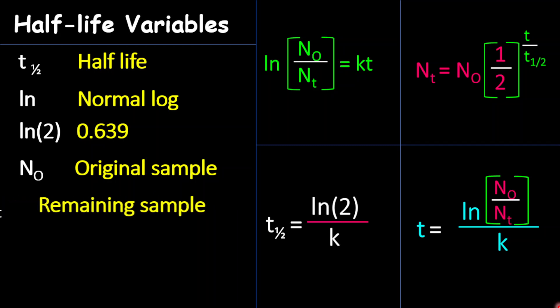And relative to that, you also see Nₜ. And Nₜ now is remaining sample, which means the final amount, or what is left after decay within a certain period of time. So it's very important for you to know the difference between the original amount and the final amount.